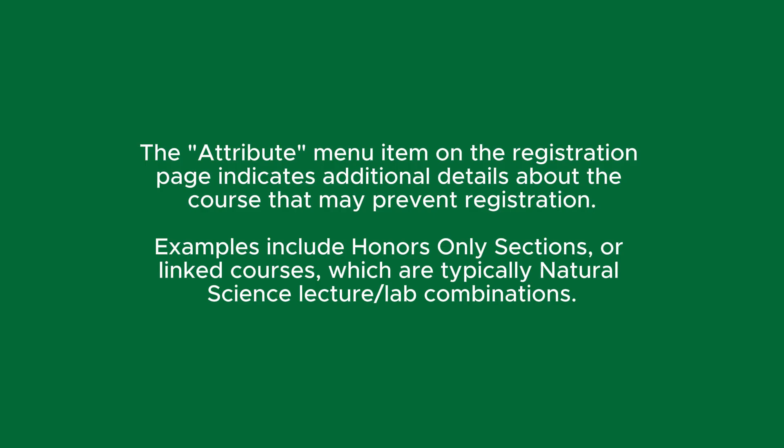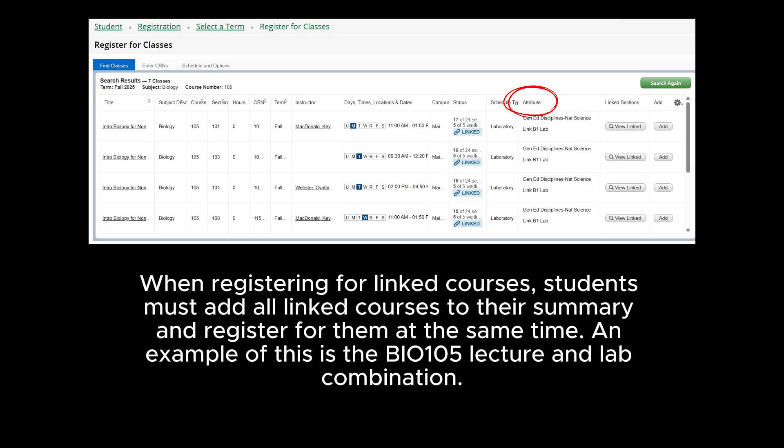The Attribute menu item on the registration page indicates additional details about the course that may prevent registration. Examples include honors-only sections or linked courses, which are typically natural science lecture/lab combinations. When registering for linked courses, students must add all linked courses to their summary and register for them at the same time. An example of this is the BIO 105 lecture and lab combination.